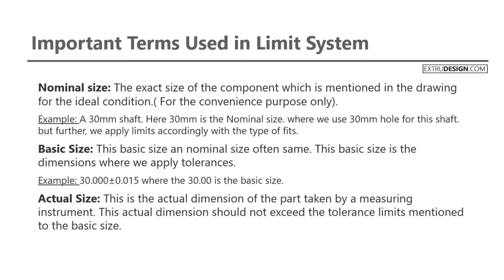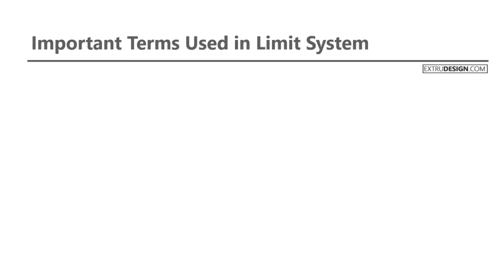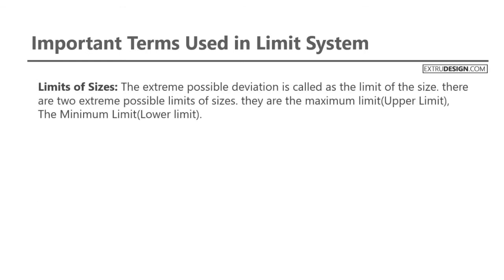The next term is actual size — the actual dimension of the part taken by a measuring instrument. This actual dimension should not exceed the tolerance limit mentioned to the basic size. For example, if the size of a shaft is measured with a vernier caliper as 30.010, this is the actual dimension of the shaft.